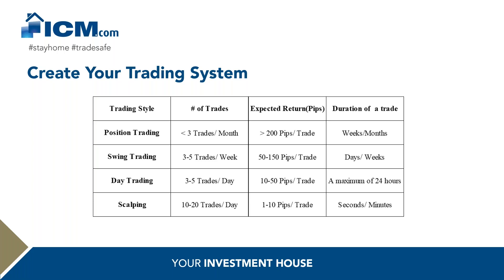Swing traders are willing to have three to five trades per week, looking across different markets, expecting to earn between 50 and 150 pips per trade, and willing to hold trades for days or weeks. Day traders — very common in forex — go for three to five trades per day, expect a return between 10 and 50 pips per trade, and are not willing to hold trades overnight. At the end of the day, they close all positions, whether winners or losers.